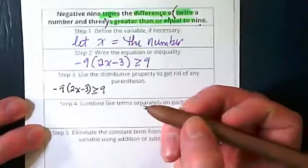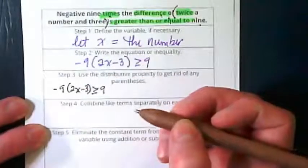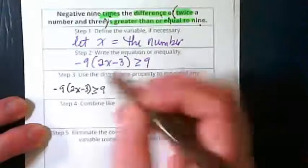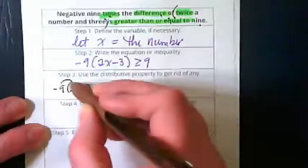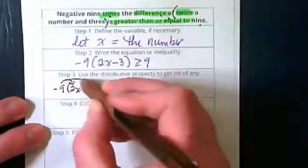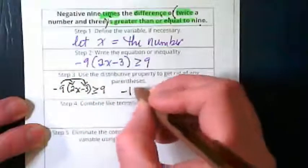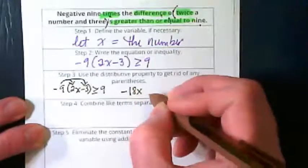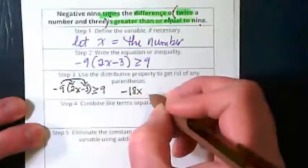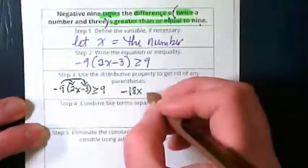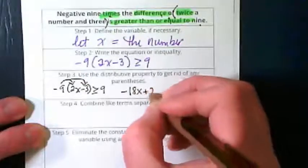What am I distributing here? I'm distributing the negative 9, which is going to get me negative 18x plus 27.